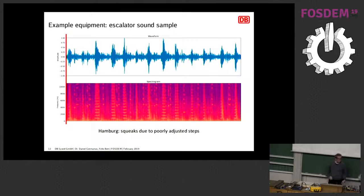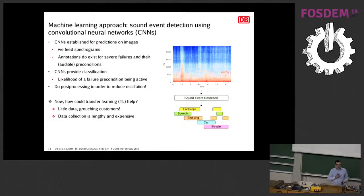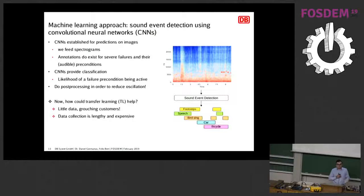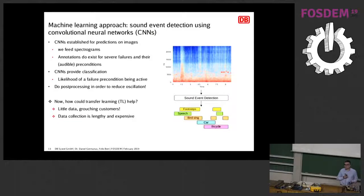Thanks, Daniel. I want to give you an overview of what we've been doing. As mentioned, we use convolutional neural networks and use the spectrograms as input images. We then find out what state the machine is in at any given moment. Of course, there is the problem that the sound right now might not be what the machine is doing all the time, so we need some kind of post-processing to reduce oscillation in our predictions. If we have a new use case, we might have very little data. So how could we use transfer learning to address that and reduce the time and cost for data labeling and acquisition of new audio?